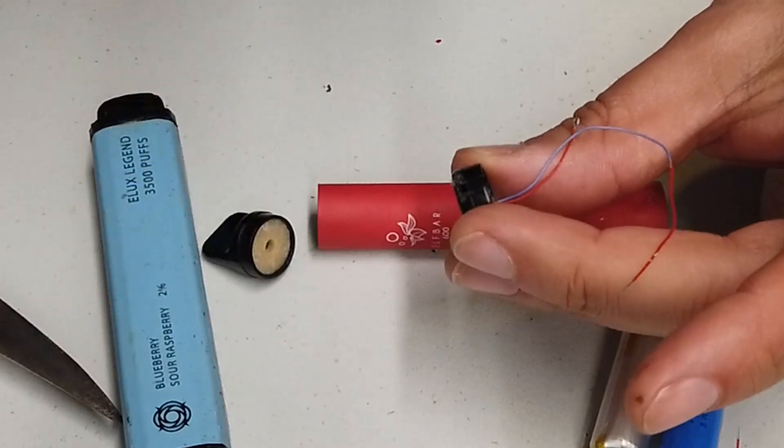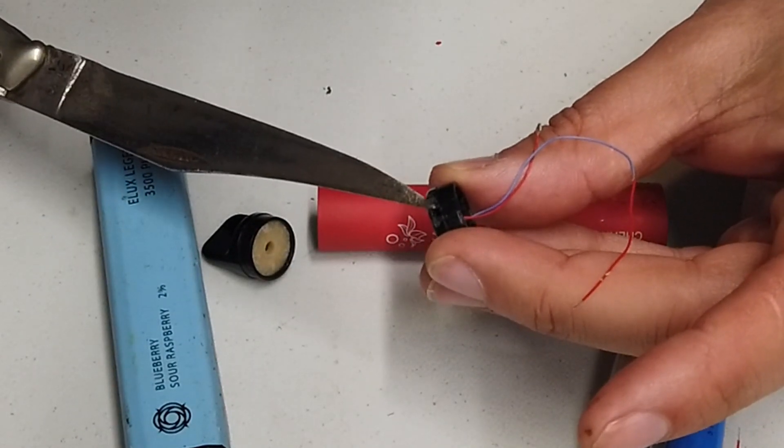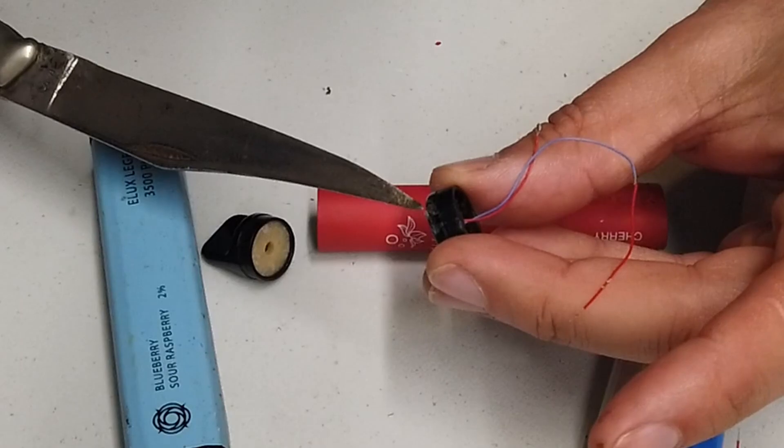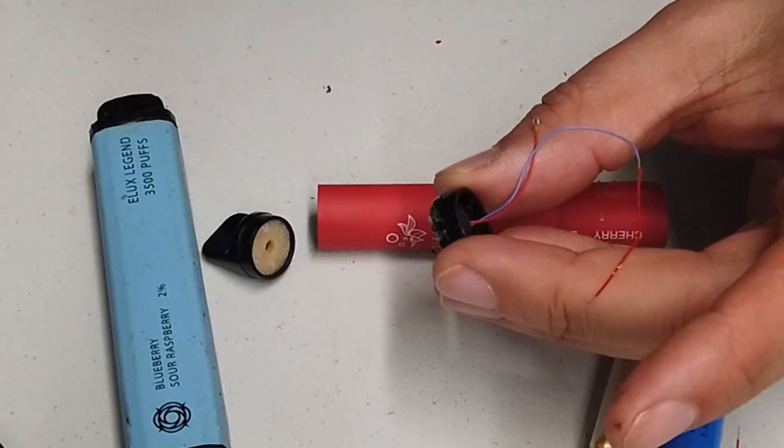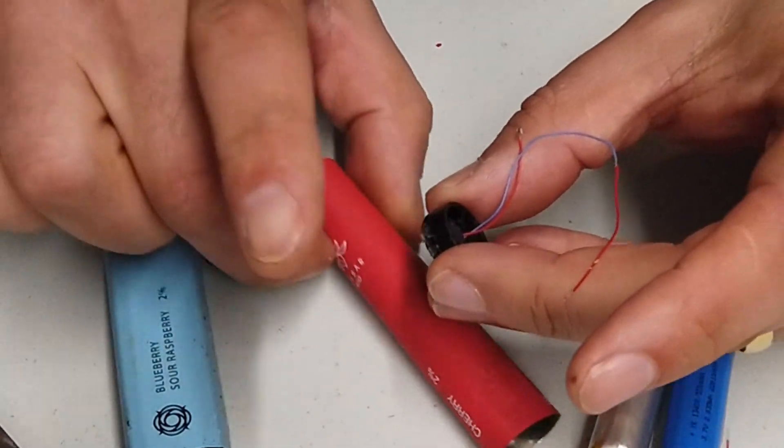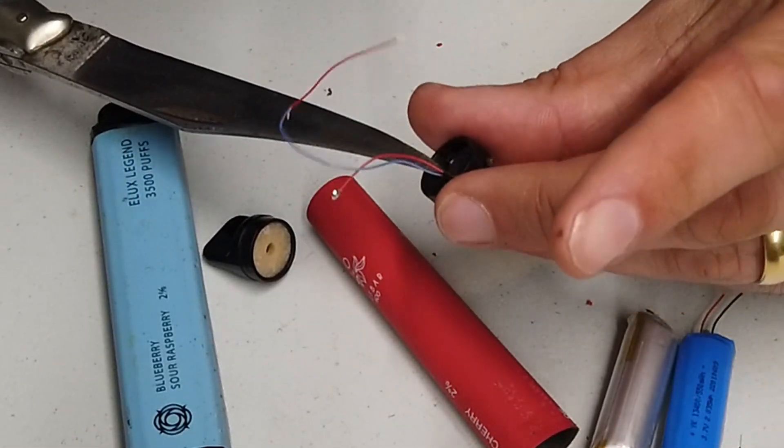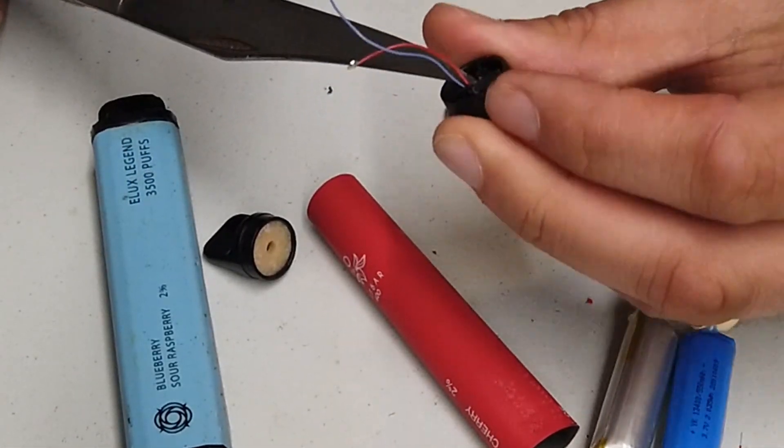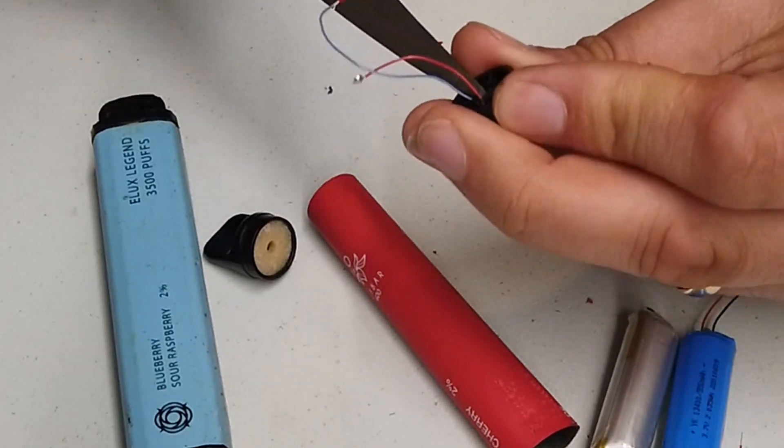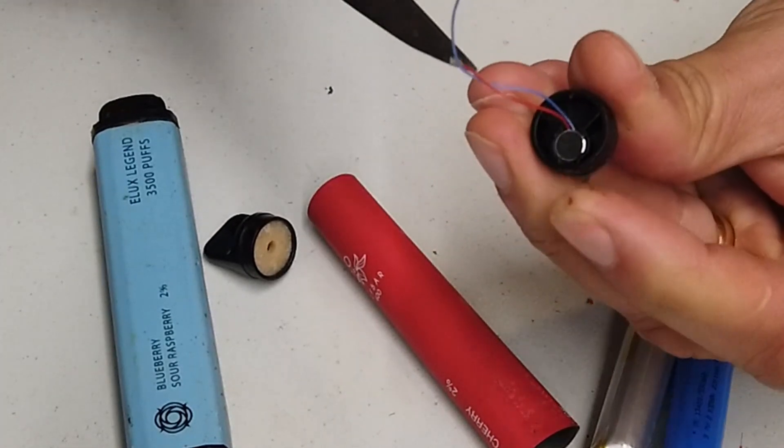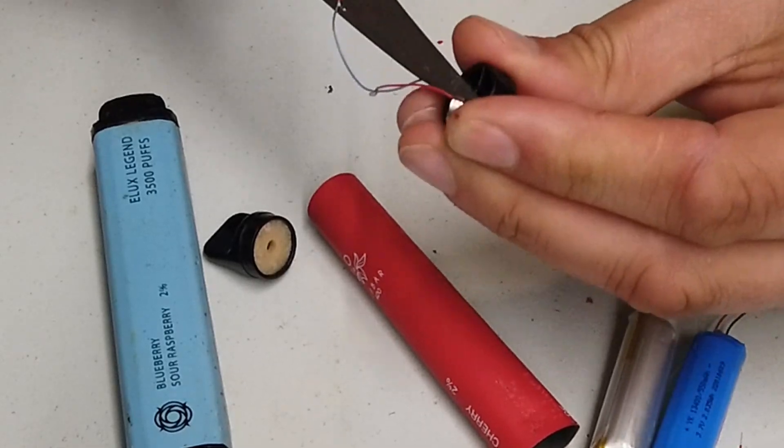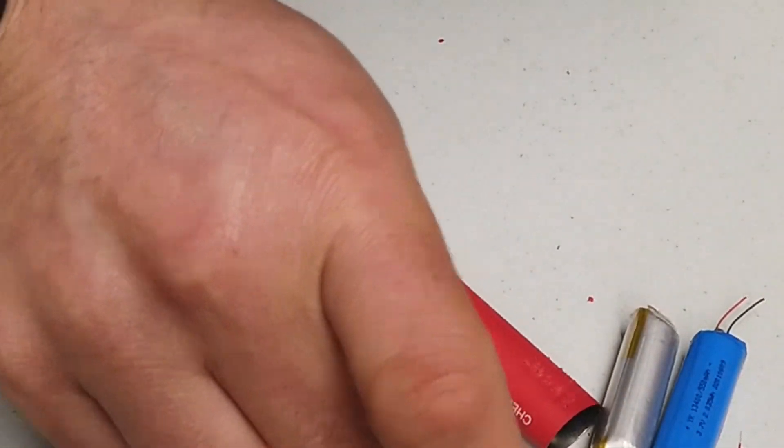So when you suck on the tip end, the bottom end switches on the coil. That is quite interesting. And actually, if you look here, there is a tiny little hole which allows the air to flow up through the inside of the tube. So that then is a pressure switch.